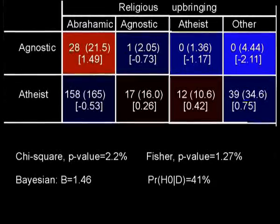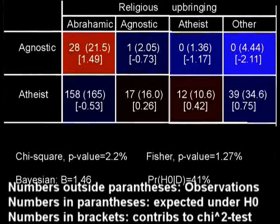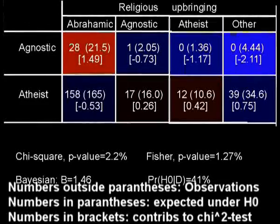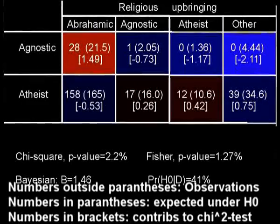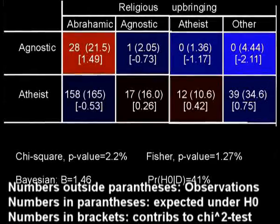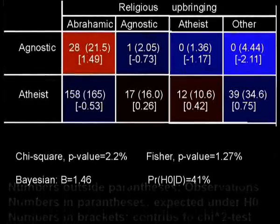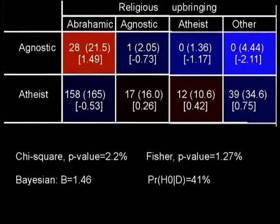The weakest was religious upbringing. I'm showing here with colours the contributions to the chi-square test, with red indicating more observations than expected under H0, and blue indicating less observations than expected. As you can see, there are fewer agnostics in the 'other' category of religious upbringing, and more with an Abrahamic religious upbringing. As a standalone frequentist test you would call H0 rejected, but the Bayesian test says that this is very weak evidence for H1 dependence.